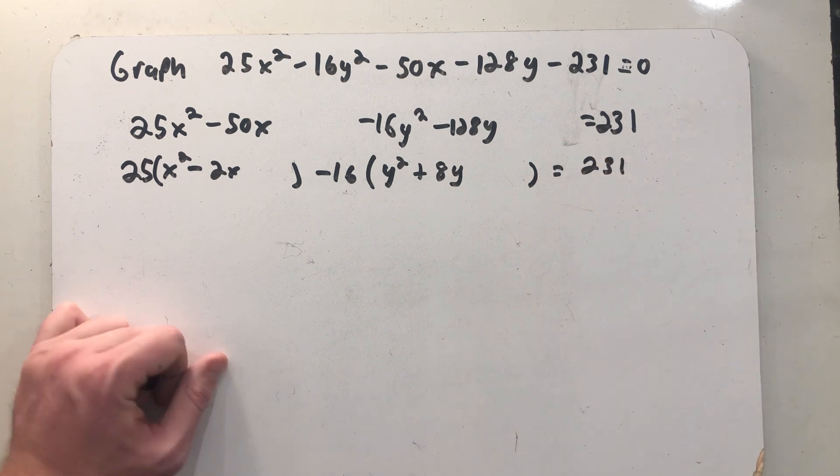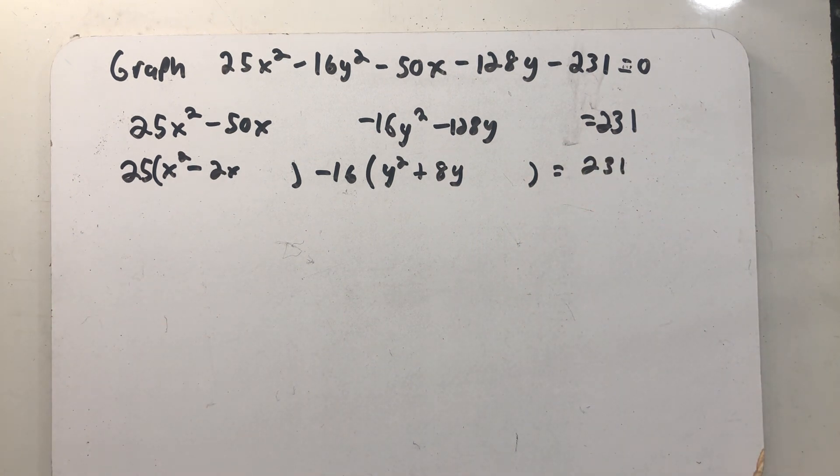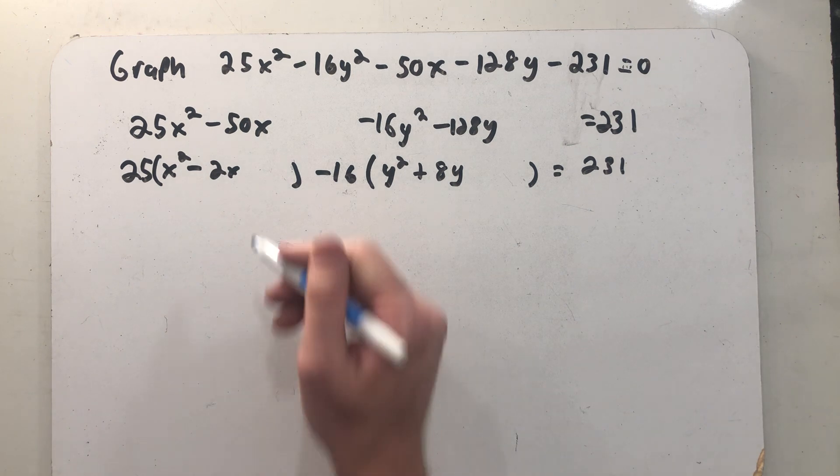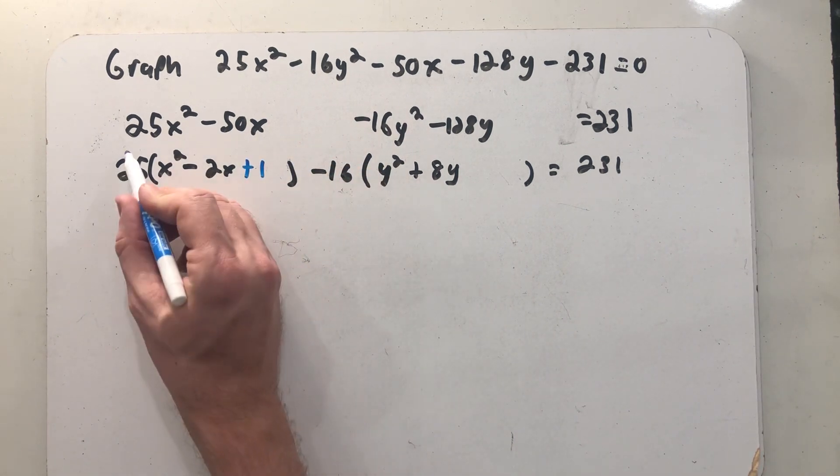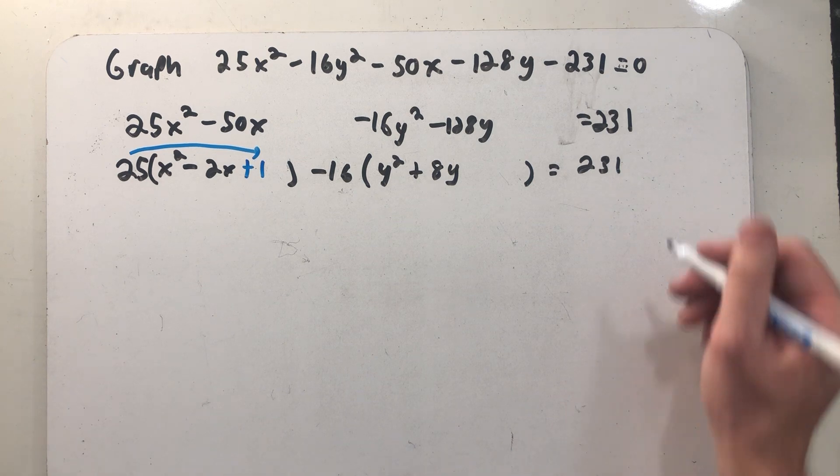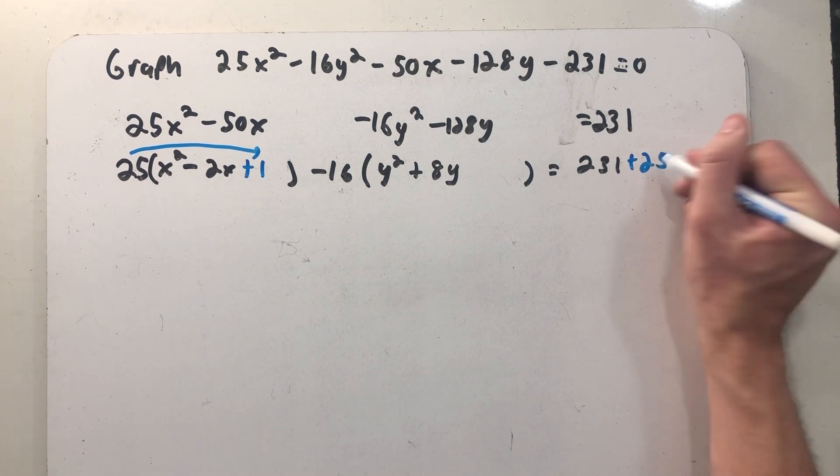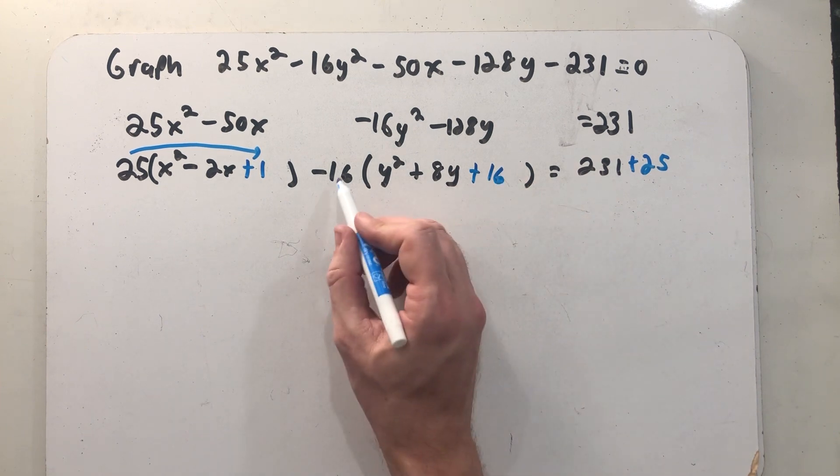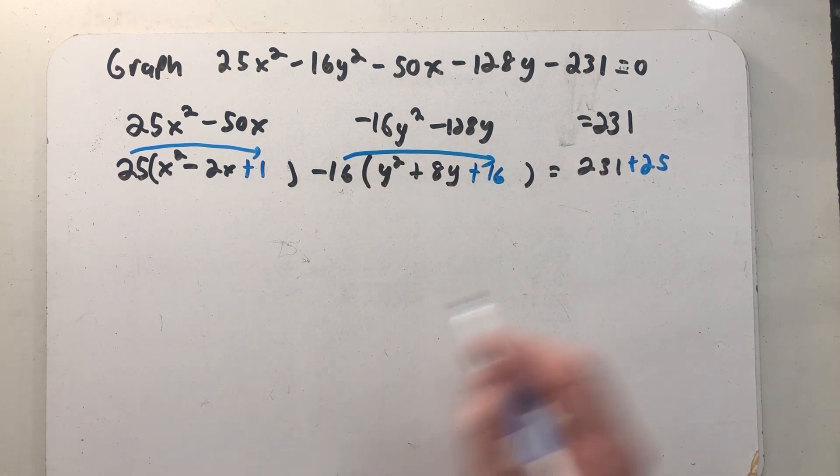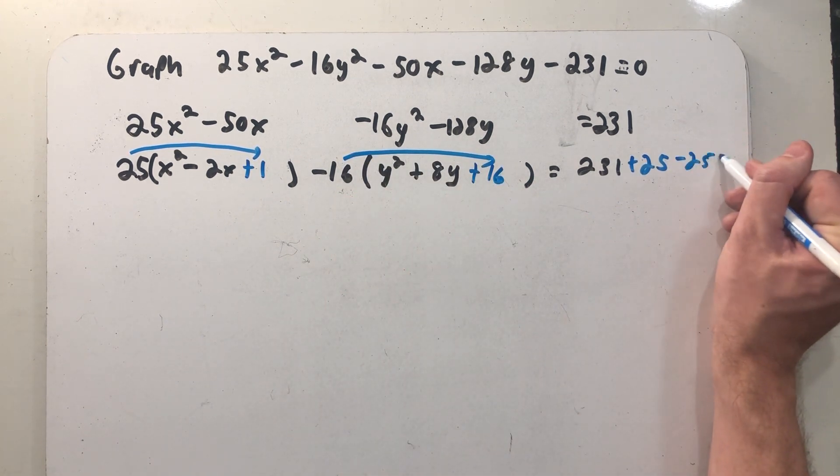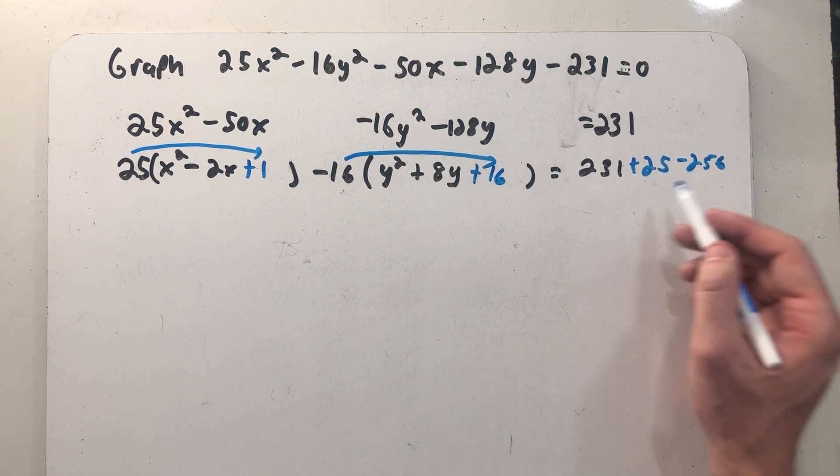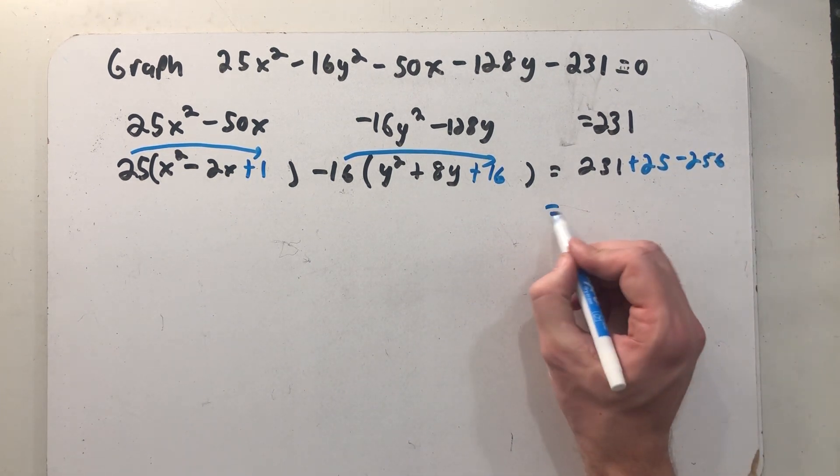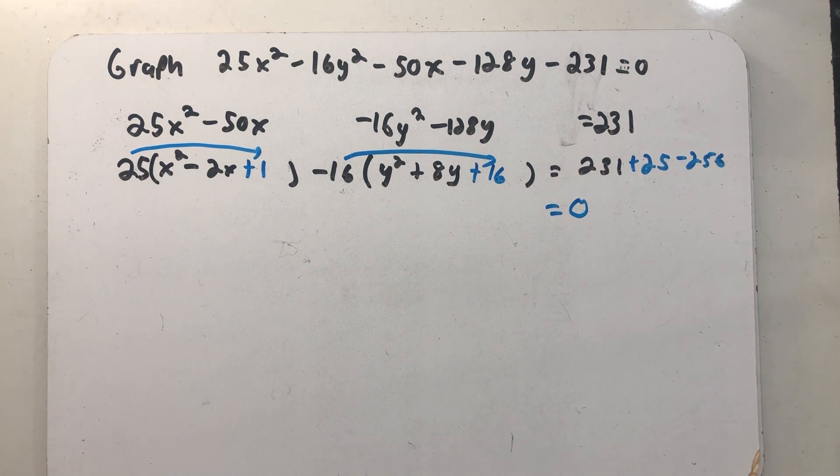All right, let's complete the square a couple times and see what happens. In that first set of parentheses we'll have to add a 1, but that was really adding a 1 times 25. And then over here we'll be adding a 16, but that's really taking away a 16 times a 16. So over here I have 231 plus 25 minus 256. Well that's 256 minus 256 is 0.